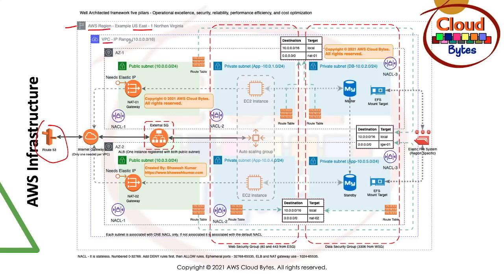Then we have a VPC with the CIDR range 10.0.0.0/16. The VPC has two Availability Zones defined here — AZ1 and AZ2. A VPC has one internet gateway and only one. There is another VPC-level resource which is the Application Load Balancer (ALB). The ALB is connected with both AZ1 and AZ2, which is why it appears at the VPC level.